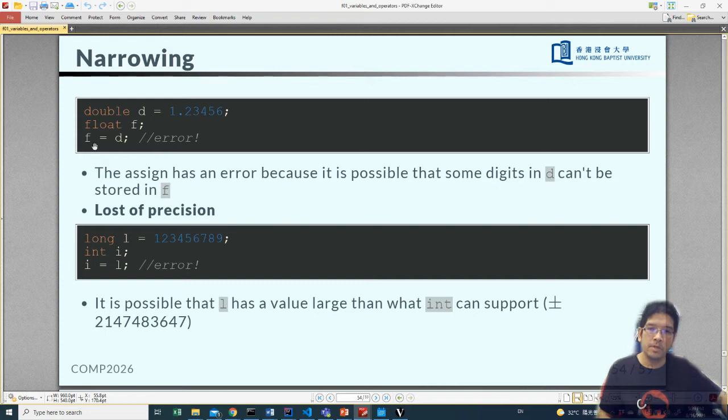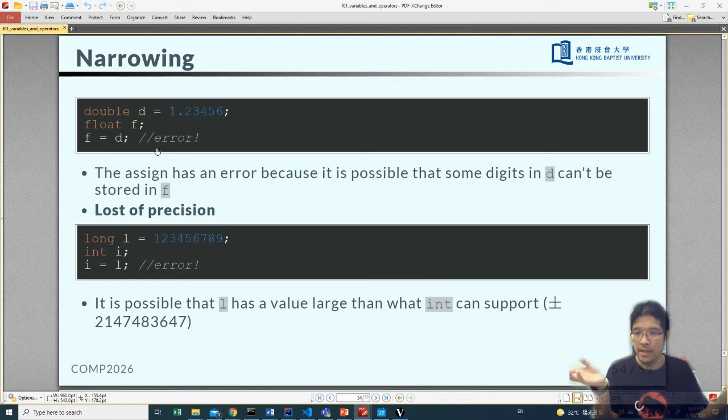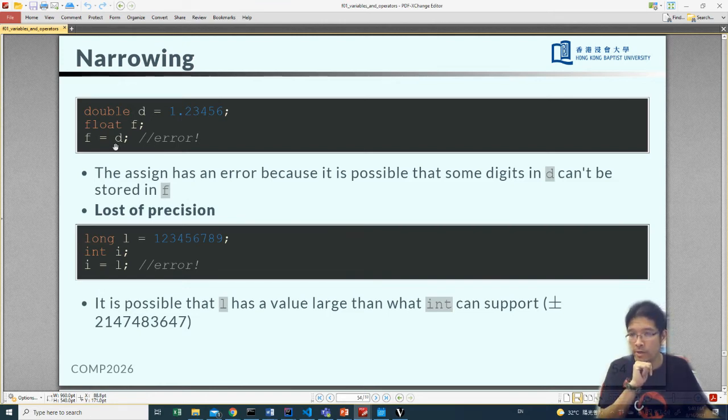What the compiler is trying to understand is you are putting a value of d, which has a double size, to float. Potentially, it will lose precision. Without running the code, the compiler would not know d is holding 1.23456. It is possible after some operation in the middle that d has stored some more content than f, where f cannot hold. So in this case, this is considered as a dangerous operation. This is a potential loss of precision. So the compiler is reluctant to compile it for you. It will say this is a compilation error. Don't do it.